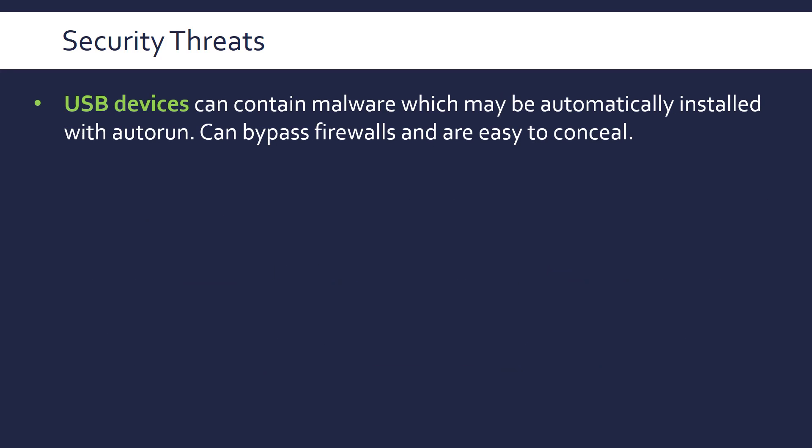USB devices are another threat — they can contain malware, especially when combined with an auto-run feature that automatically installs anything on the device. It's not just thumb drives; a memory chip can be concealed in a keyboard, mouse, or any USB device. This is where physical security is critical, because USB attacks can bypass any firewalls you have, and these devices are very easy to conceal.